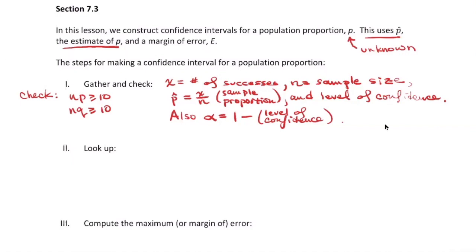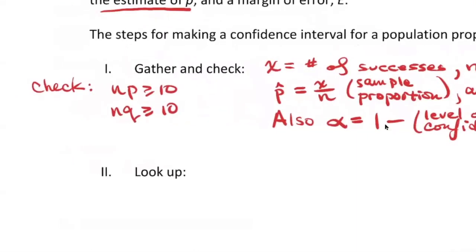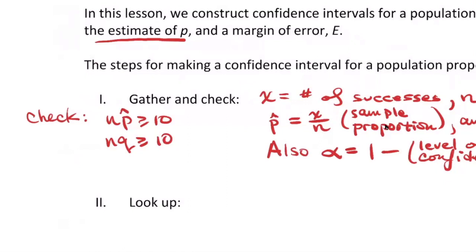For example, the population proportion could be the president's approval rating. Nobody knows what that is because nobody's asked every voter, except on election day. Until election day, all the numbers you see are p-hat — they're estimates — and they all have a margin for error. When we verify normality is legitimate, it requires p, but since you don't know p, you use p-hat. And q-hat will be 1 minus p-hat.